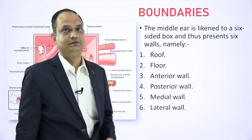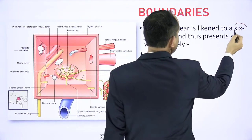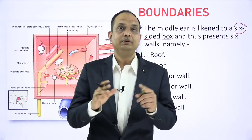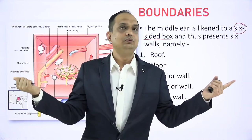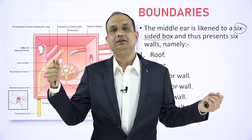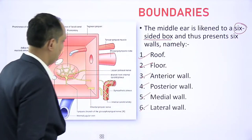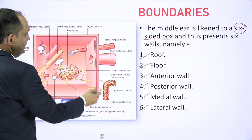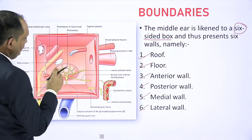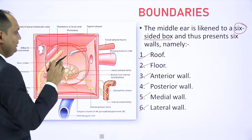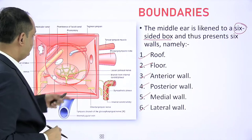Now we discuss the boundaries. The middle ear is likened to a six-sided box. You can imagine the room you are sitting in — a room has six sides: roof, floor, anterior wall, posterior wall, and two lateral sides. In the middle ear: one is the lateral wall and another is the medial wall. So there are six sides — roof, floor, anterior wall, posterior wall, medial wall, and lateral wall. After removing the lateral wall, which is the tympanic membrane, you can see all the structures.